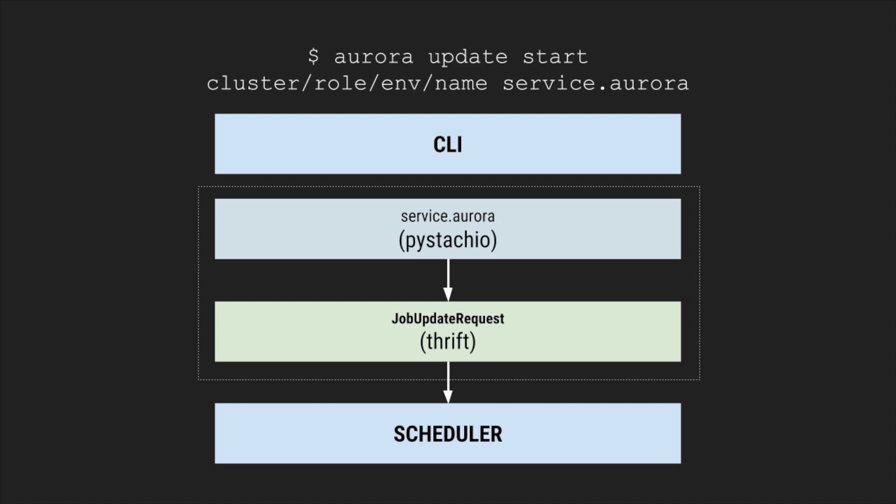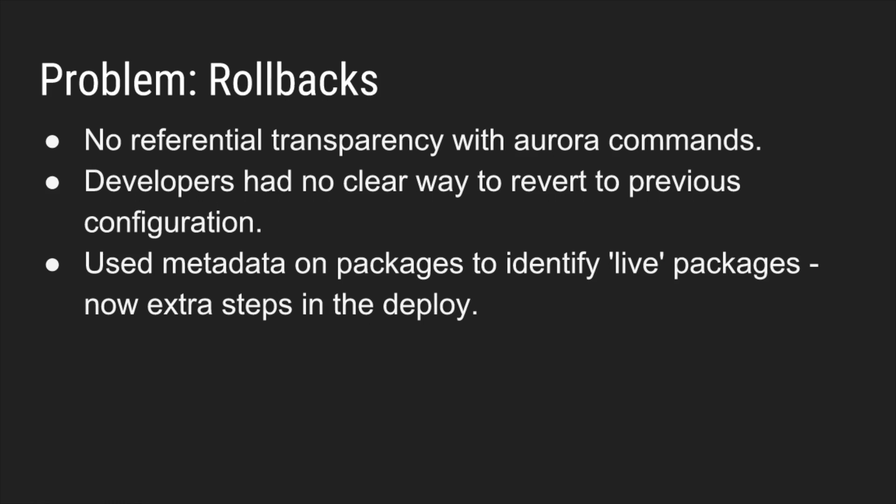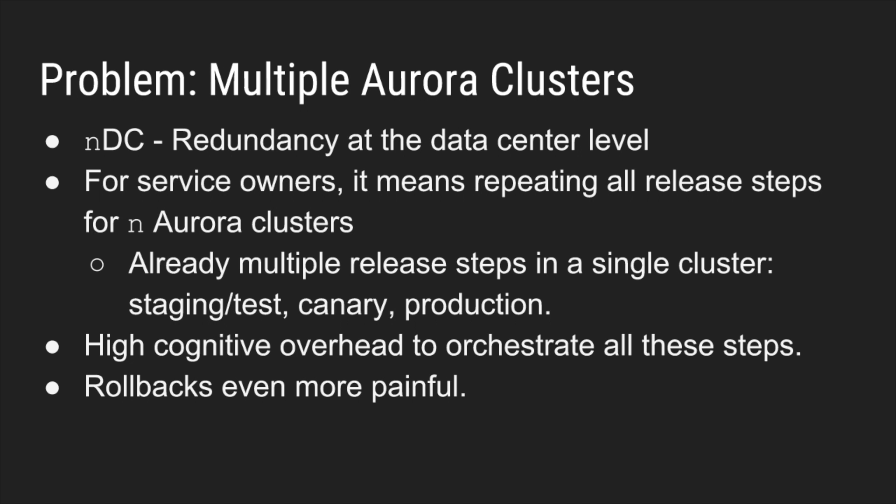We couldn't rely on things like source control to do rollbacks. Users couldn't just check out the branch where their service.aurora file was when the server was in a good state, because it might evaluate to the current or a future state. So developers had no clear way to revert to previous configuration. What they wanted access to was the job update request, but all their services were defined in the DSL. Users ended up annotating their packages with a 'live' flag, meaning they had to go in and edit their file to roll back — and this was compounded by the fact that we have multiple Aurora clusters.